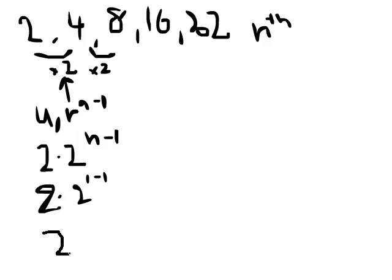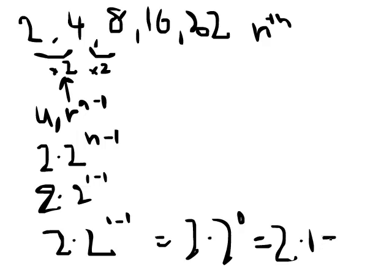So, 2 times 2 to the power of 1 minus 1 would give us 2 times 2 to the power of 0. And as we know, anything to the power of 0 equals 1. So, 2 times 1 equals 2, which gives us the first term.